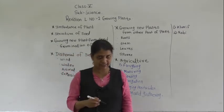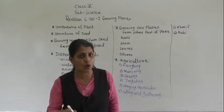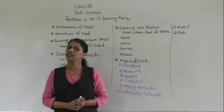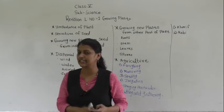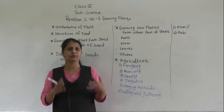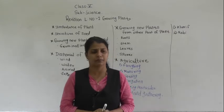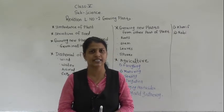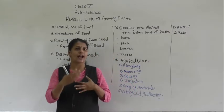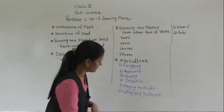The seed has a seed coat. The two main parts of the seed are the seed coat and the seed leaves. We have also discussed the functions of each of these parts.